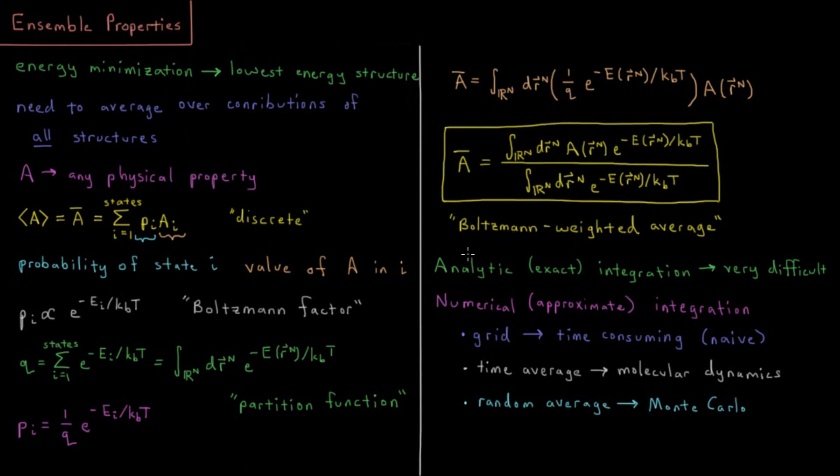So in principle, what we would want to do is we'd want what's called an analytic integration of this integral. We just want to do what we do anytime we see an integral, is try to integrate it and get the exact result as a function of all of our input variables and parameters. That kind of analytic integration, in general, these are going to be 3n XYZ coordinates in our system, 3 for each atom and n atoms. So in general, that's going to be a high dimensional function, that's going to be an extremely difficult integral to do.